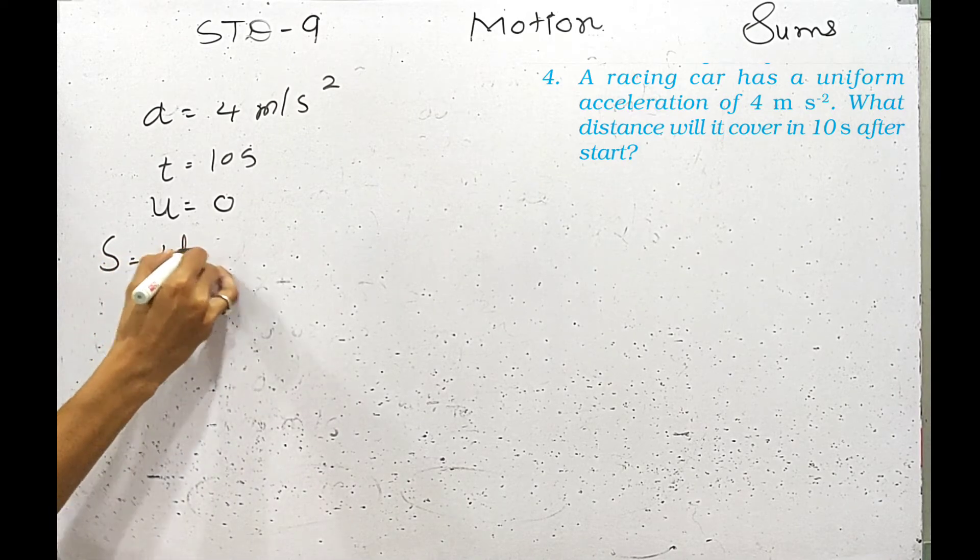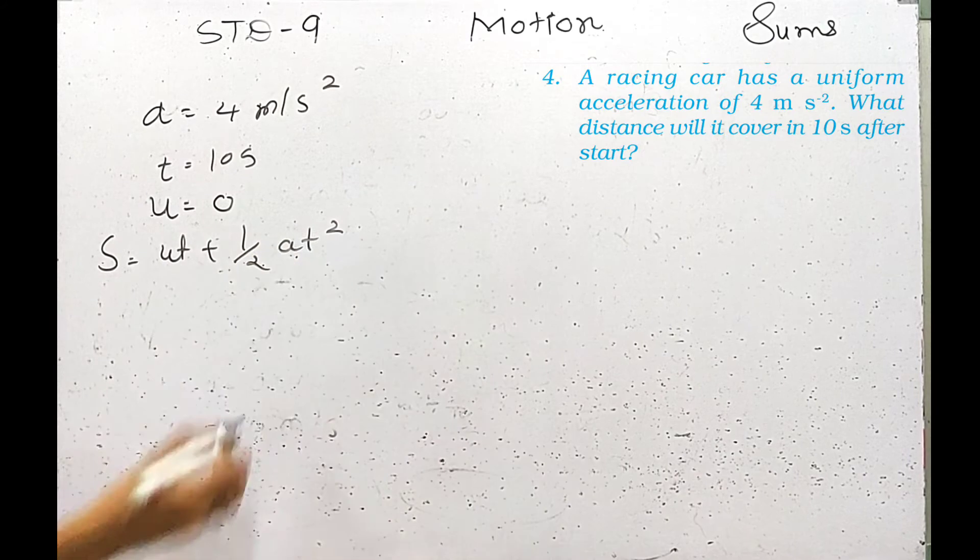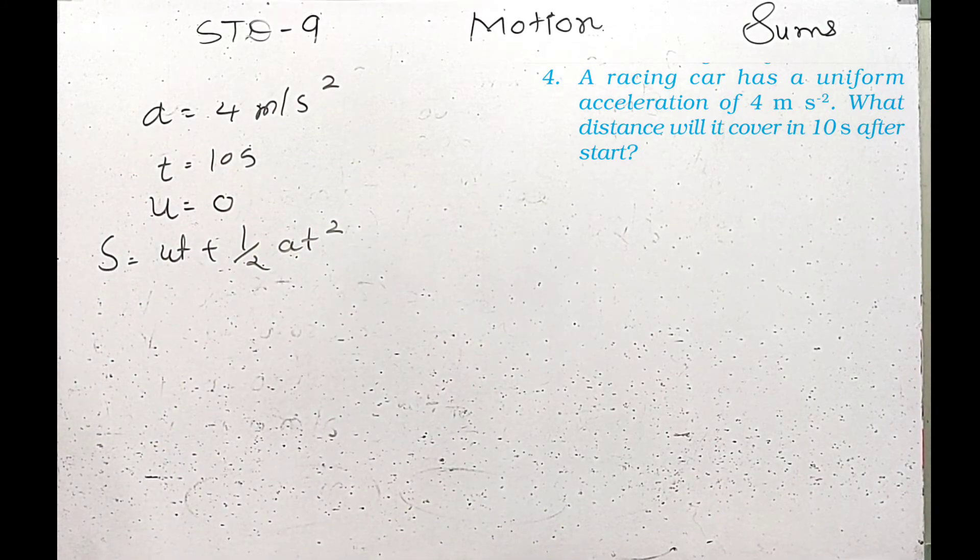That is s equals ut plus half at squared because I do not know the final velocity. I will use this distance formula.